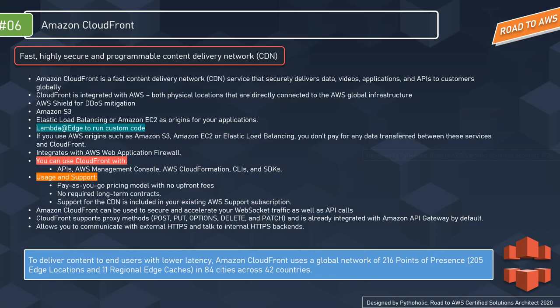If you use AWS origins such as Amazon S3, EC2, or Elastic Load Balancing, you don't pay for data transferred between those services and CloudFront. CloudFront also integrates with AWS WAF, the web application firewall that protects your web applications or APIs against common web exploits. You can create your CDN with CloudFront using APIs, the AWS management console, CloudFormation, CLIs, and SDKs. AWS offers a pay-as-you-go pricing model with no upfront costs and no long-term contracts.